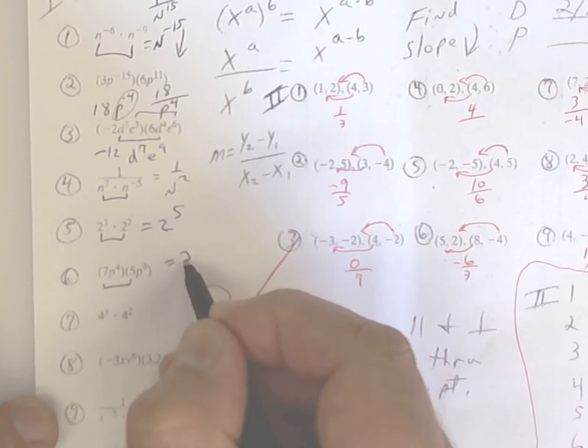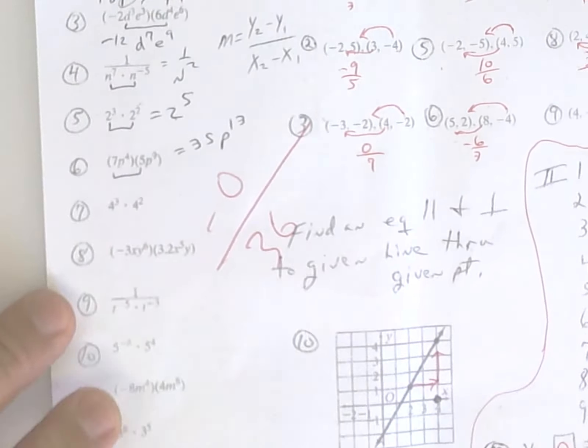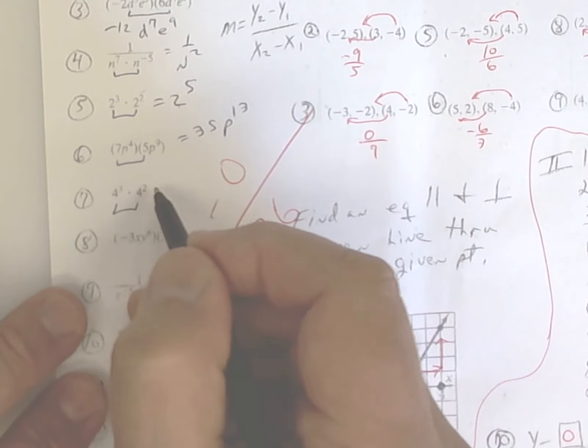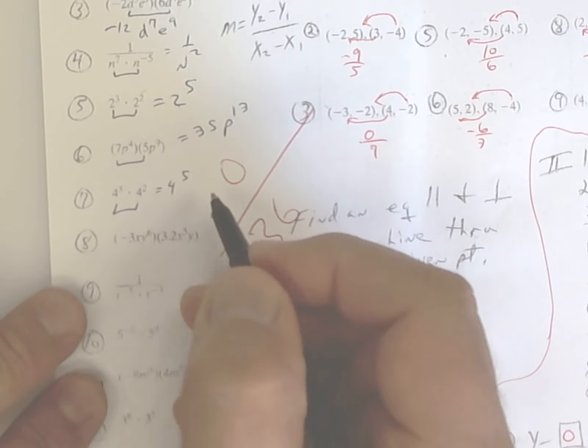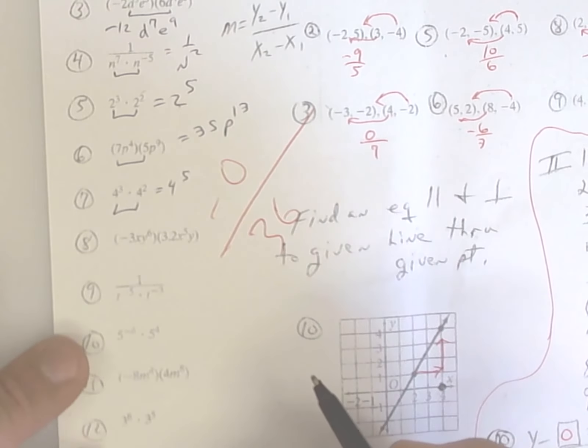7 times 5 makes 35. p to the 13th power, it looks like. You have the same base. You add exponents, so it's going to be 4 to the fifth power. Again, do not multiply your bases.